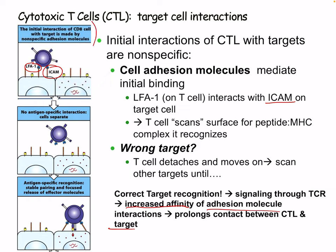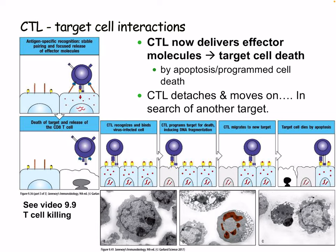When correct target recognition occurs, there is signaling through the T cell receptor, resulting in increased affinity of adhesion molecule interactions, which prolongs contact between the CTL and the target, allowing action to take place. The initial interaction is made by nonspecific adhesion molecules — LFA-1 to ICAM. If there's no antigen-specific interaction, the cell separates. But if there is antigen-specific recognition, there will be stable pairing and focused release of effector molecules to kill the cell. The CTL delivers its effector molecules once stable pairing is achieved, causing target cell apoptosis. The CTL then detaches, moves on, and searches for another target — one CTL can kill multiple cells. It can recognize and bind to another virus-infected cell, programs the target for cell death inducing DNA fragmentation, then migrates to a new target.